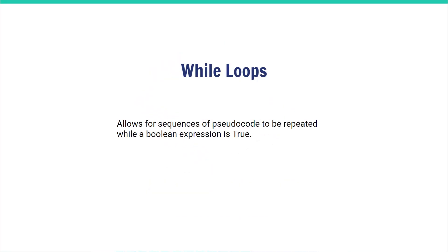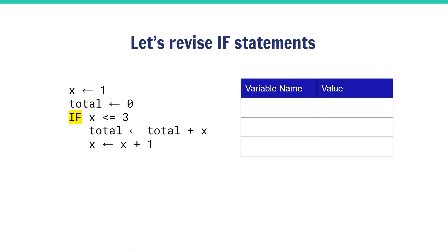While loops allow sequences of pseudocode to be repeated while a boolean expression is true. To better understand this, let's revise if statements really quickly. There's the if keyword highlighted; we're going to step through the lines.